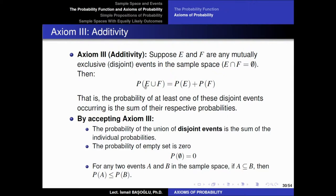E union F means at least one of these disjoint events will occur. So the probability of the union equals the probability of the first event plus the probability of the second event, if and only if their intersection is empty. Please do not forget this — this equation is only valid when the intersection is empty. By accepting the additivity axiom, we say that the probability of the union of mutually exclusive events is the sum of the individual probabilities.